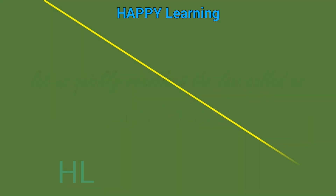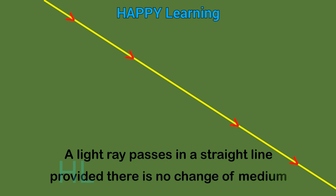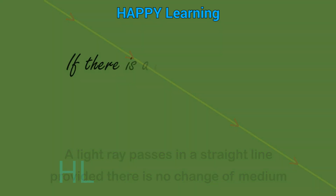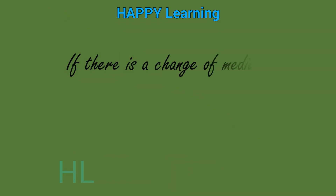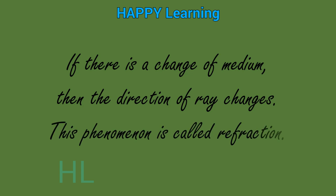Let us quickly recollect the law called Snell's law. A light ray passes in a straight line provided there is no change of medium. If there is a change of medium, then the direction of the ray also changes, and this phenomenon is called refraction of light.